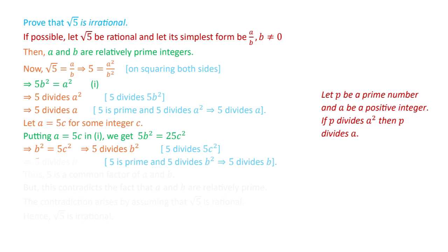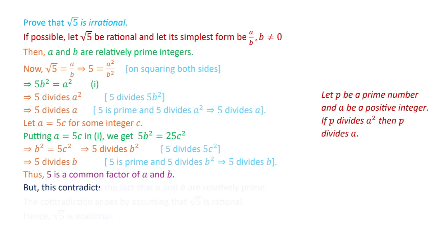So we have two conditions: 5 divides a and 5 divides b. This means 5 is a common factor of a and b. But this is a contradiction to the fact that a and b are relatively prime, which we assumed by the definition of the simplest form of the rational number.